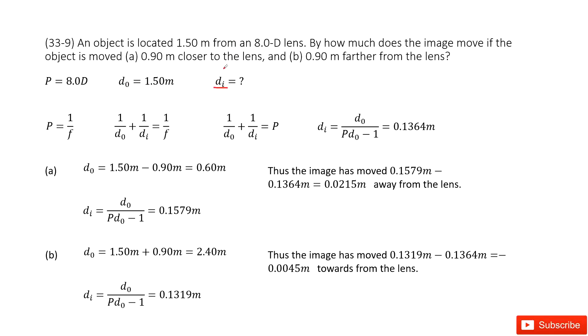So for the first case, write the original image distance where it's located. We can write down the lens equation. We can see d0 is given, di not known, the focal lens don't know. But what's given is the power.